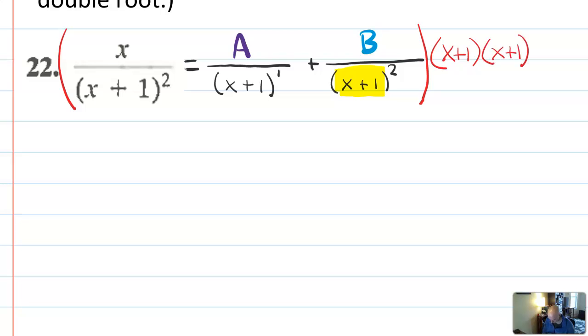So what's going to clear out? Well, in the first one, that entire thing will clear out. In the second b value, that entire thing will clear out. And in the a value, one of those will clear out, and one of them will remain. So let's kind of rewrite that out. So it's going to be x equals a x plus one plus b. Okay.